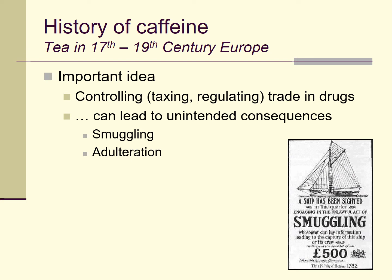Some of the very same problems we see today with the trade in illegal drugs were occurring back in the 17th century around the trade of tea — problems like smuggling. There was an enormous amount of smuggling of tea into Europe and even into America, with crimes and crime syndicates organized around importing this precious, highly taxed, and expensive commodity. There was also a problem of adulteration: if you bought tea in Europe or America during this time period, you might wonder if the dried brown leaves were actually tea or something else mixed in to increase the supply and profits.